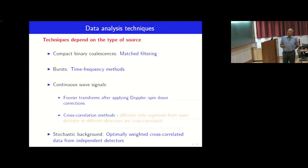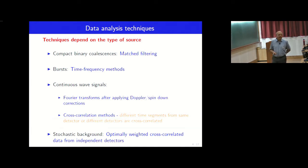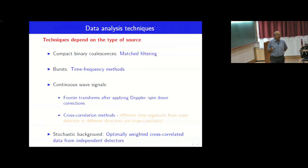And the techniques depend on the type of source. So for compact binary coalescences, we have this where we know the waveform quite well. So there is this method of matched filtering where we follow the phase of the signal. Then there are burst sources which use basically time frequency methods.